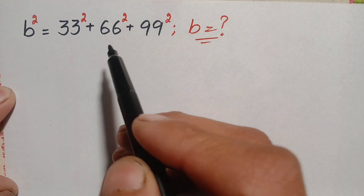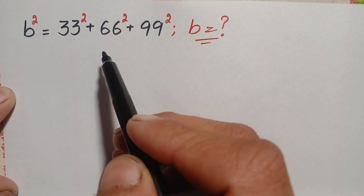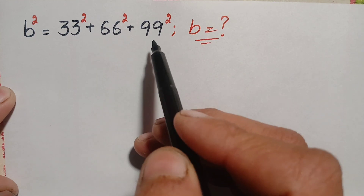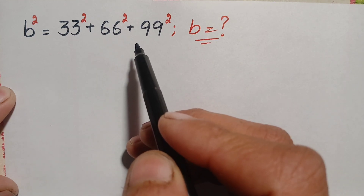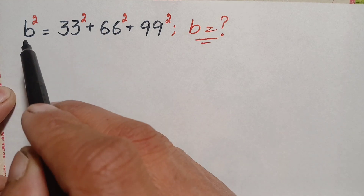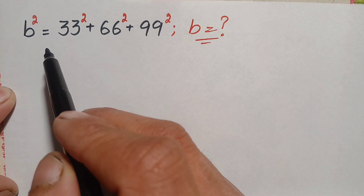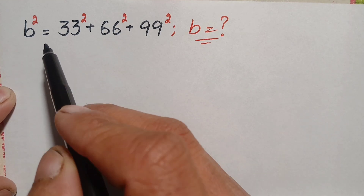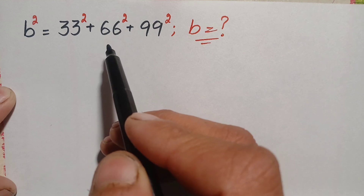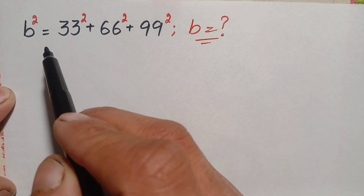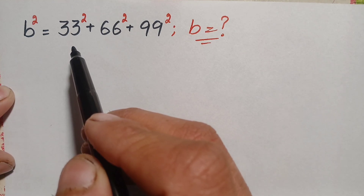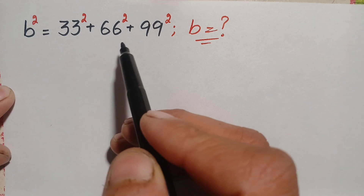We can solve this problem using different approaches. The first approach is to find the value of each term, sum them, and take the square root on both sides. The second approach is to use exponential identities on the right-hand side. We will use the second approach and try to factorize these numbers.